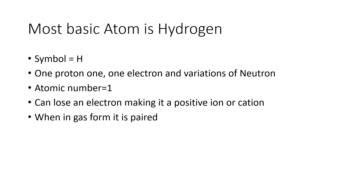The most basic atom, as mentioned, is hydrogen. It has one proton, one electron, and variations of neutrons. The atomic number is 1. If hydrogen loses its electron — which is negatively charged — it ends up becoming a positively charged ion called a cation.